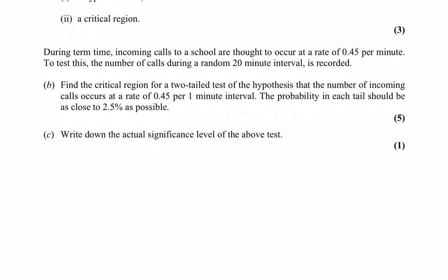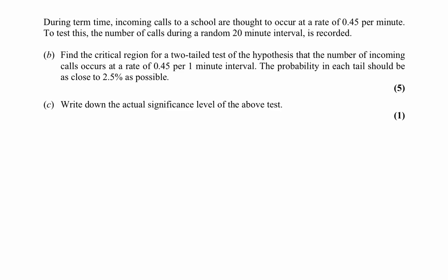Now let's move on to the main part of the question. We're told that in term time at a particular school, incoming calls arrive at the rate of 0.45 per minute. To test this, the number of calls during a random 20-minute interval is recorded. We have to find the critical region for a two-tailed test. The null hypothesis is that lambda equals 0.45 — the rate of calls is 0.45 per one-minute interval.